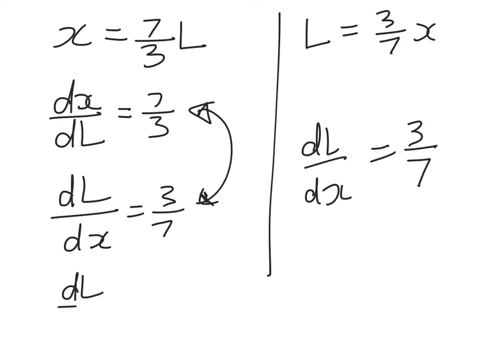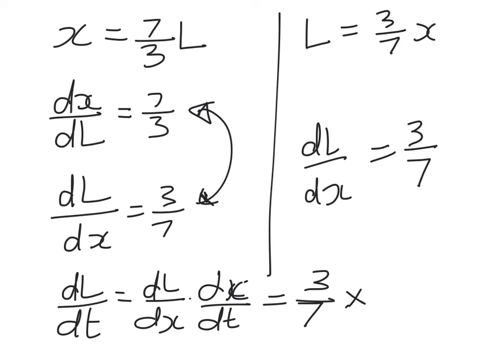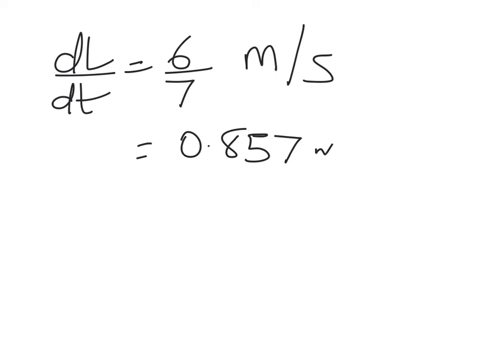But either way, we are good to go now. We've got dl by dt is equal to dl by dx times dx by dt. So that equals 3 sevenths times 2, which is equal to 6 sevenths. And now we need to think about units in there. So dl by dt is equal to 6 sevenths, and that needs to be metres per second. And that works out to be 0.857 metres per second, and that's to 3 decimal places.